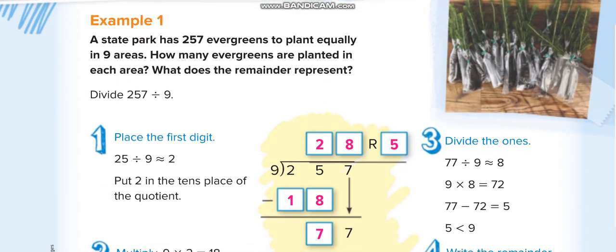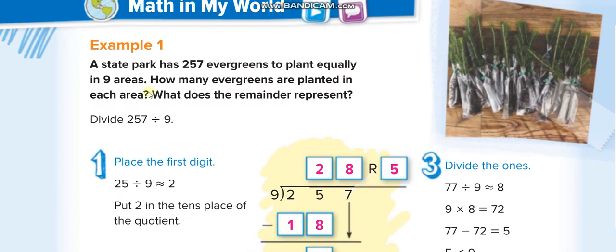Interpreting the remainder means, like here in the first question, they said a state park has 257 evergreens to plant equally in 9 areas. How many evergreens are planted in each area? So they want to plant 257 plants equally in 9 areas.